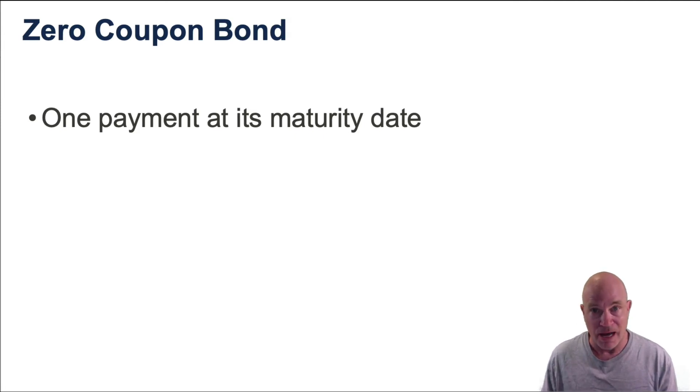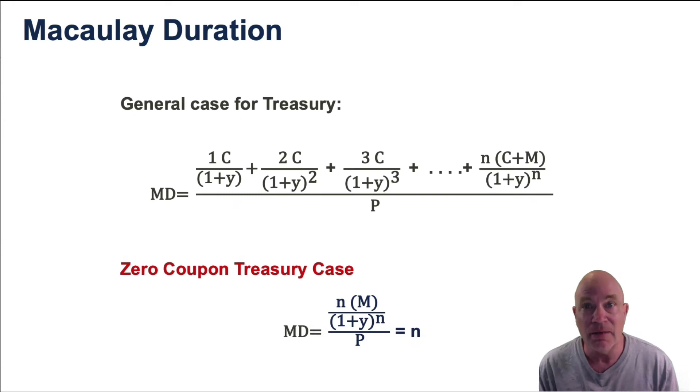Based on that, we can modify the Macaulay duration calculation. You see the general case at the top of the screen. At the bottom, you see the case of a zero-coupon bond.